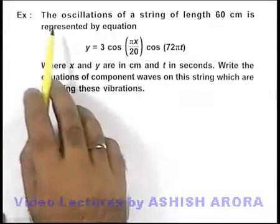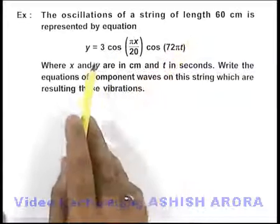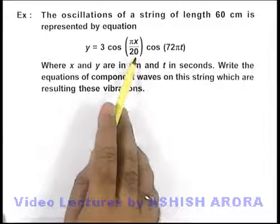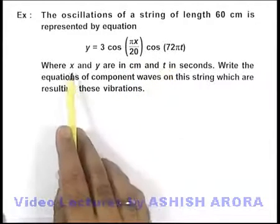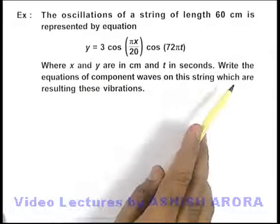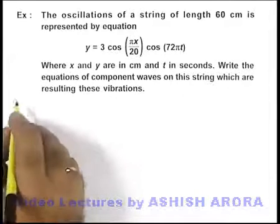In this example, we are given that the oscillations of a string of length 60 centimeters is represented by the equation y = 3 cos(πx/20) cos(72πt), where x and y are in centimeters and t in seconds. We are required to write the equations of component waves on this string which are resulting these vibrations.